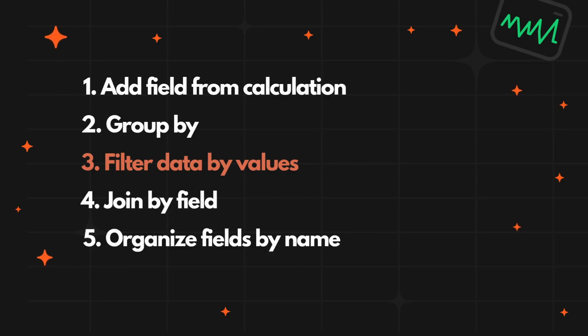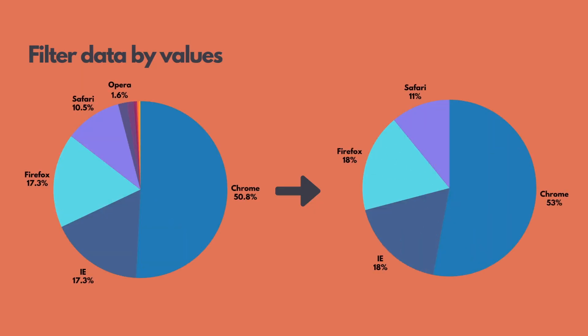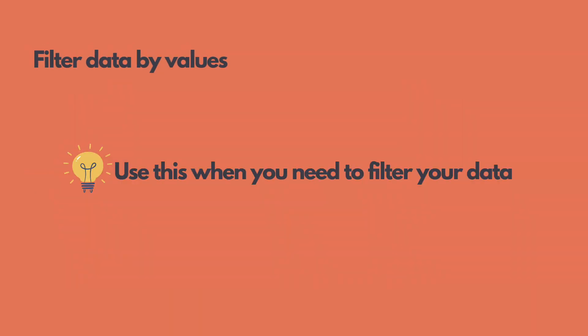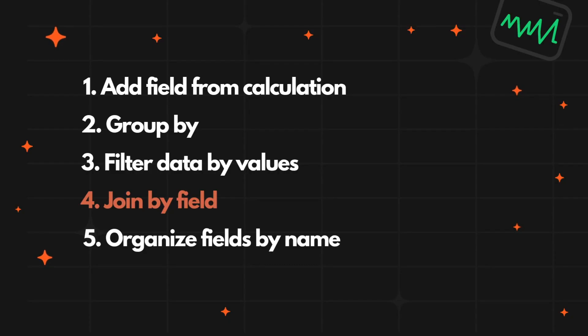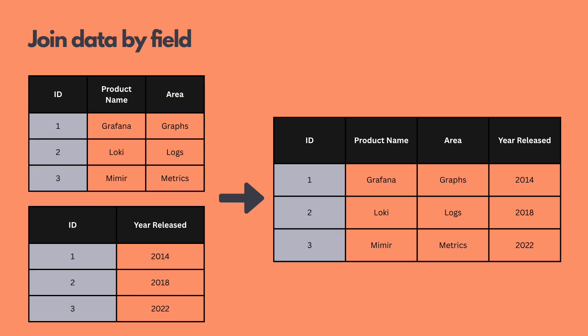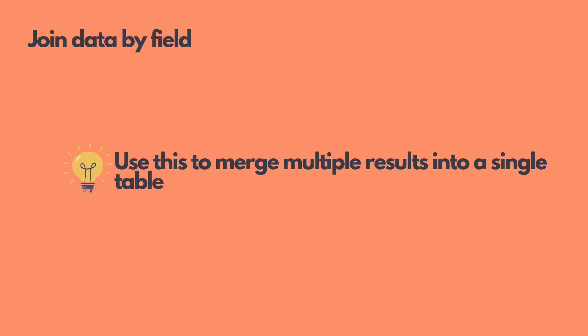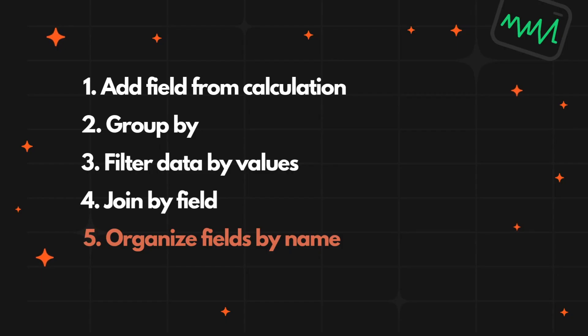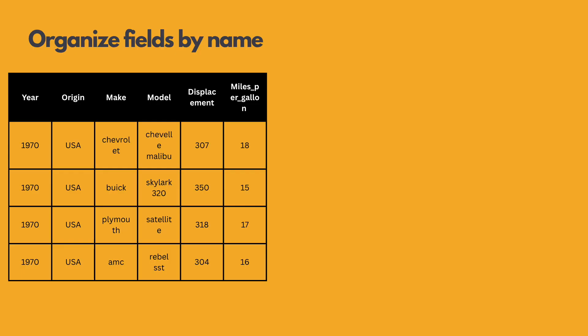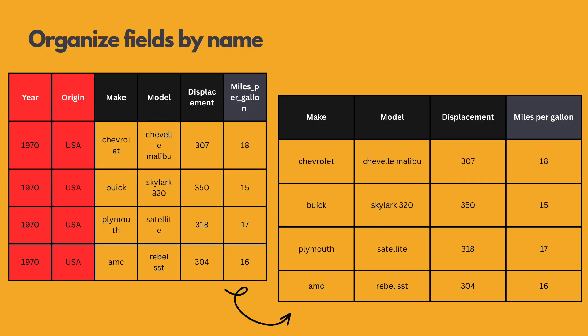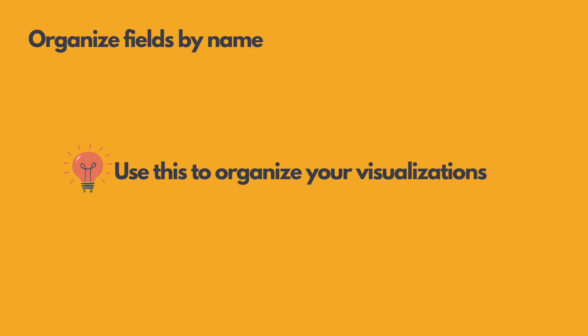The Filter Data By Values transformation allows you to include or exclude rows based on specific values in one or more fields. It's similar to the SQL Where clause. Use this transformation to selectively filter data points directly within your visualization. The Join By Field transformation is used to combine two or more data tables that share a common field. It's similar to the SQL Join clause. Use this transformation to merge multiple results into a single table, enabling the consolidation of data from different queries. Finally, the Organize Fields By Name transformation allows you to rename, reorder, or hide fields returned by a single query in your panel. Use this to make your visualizations more organized, especially after applying multiple transformations.